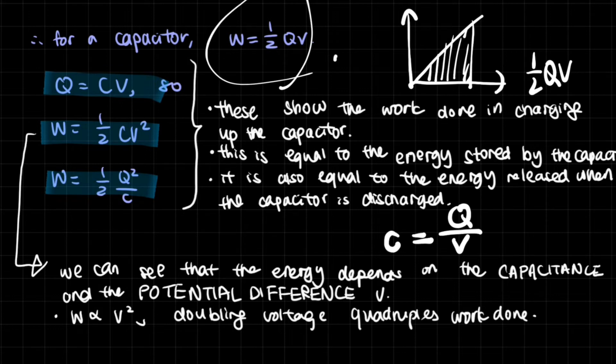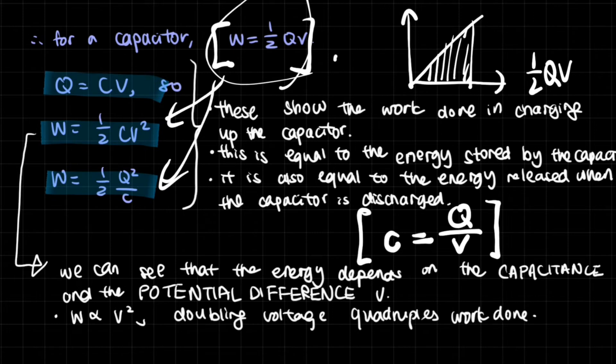Most importantly, we have these two equations. And these two equations are required in order to give you all of these that could be used in certain questions. So we can see that the energy depends on the capacitance and the potential difference. And the work done is actually directly proportional to the voltage squared. And so this basically tells us that doubling the voltage could quadruple the work done.